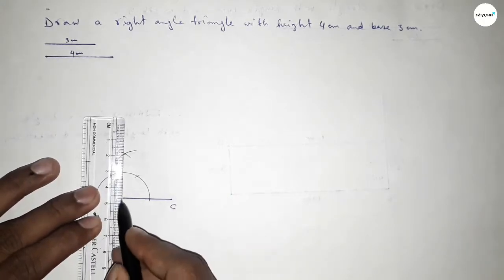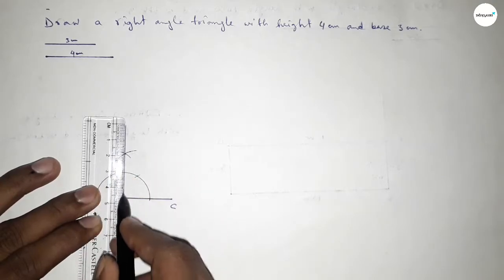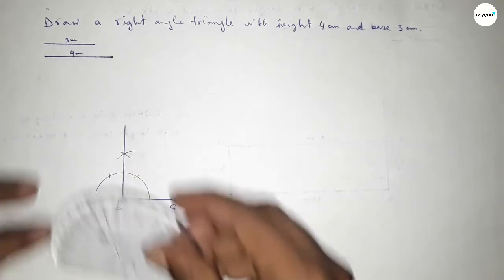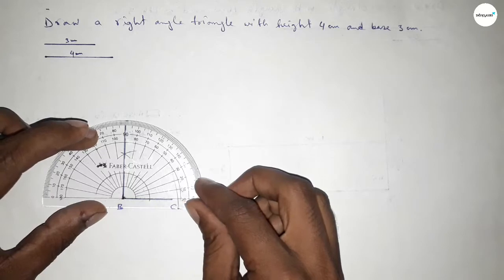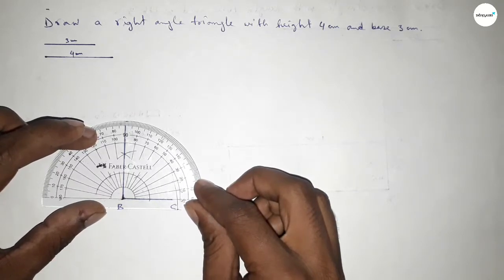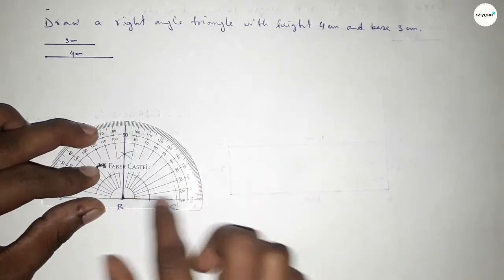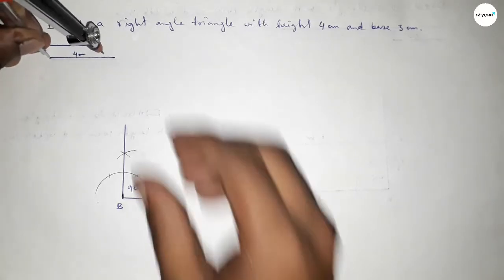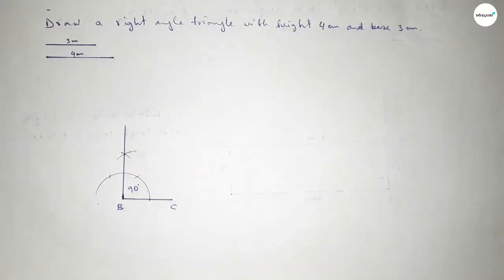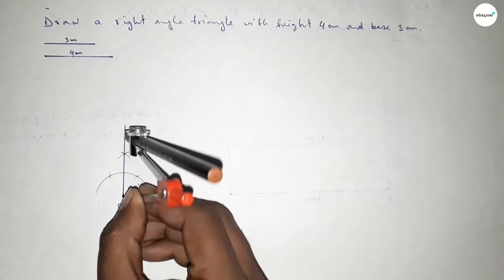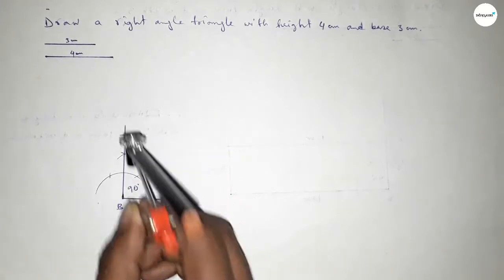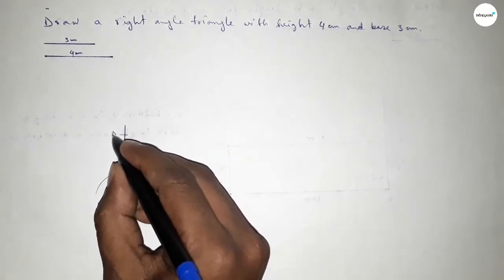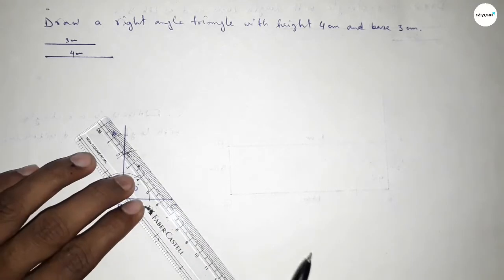Both curves intersect at a point. Now joining this side to get a 90 degree angle. Checking — this is perfectly 90 degrees. Now taking the length of height 4 centimeters, putting the compass here and cutting here, so taking here point A.